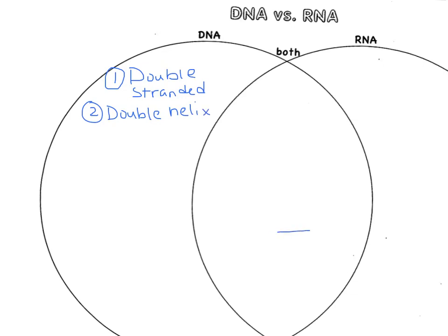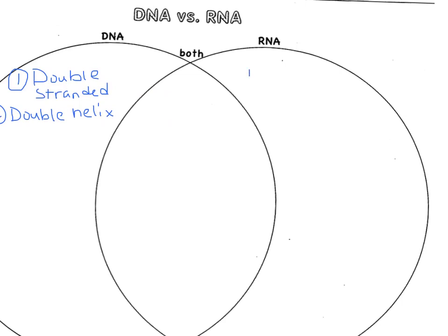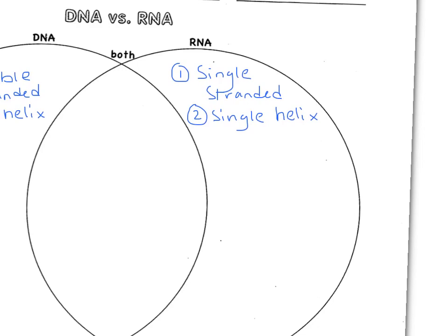If we go to the RNA side, it is single-stranded, sometimes called a single helix. So on the side here, we can go ahead and just draw maybe a picture of RNA. RNA kind of has this twisty-looking shape, but it's just a single side.